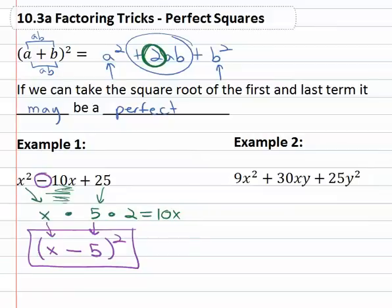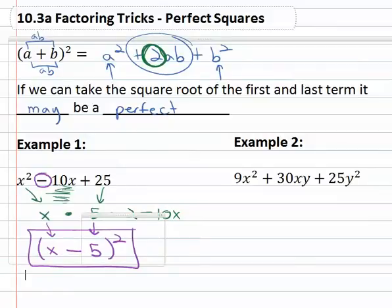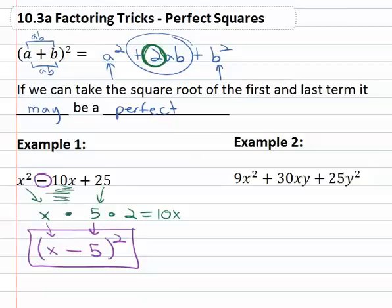Let's look at another one: nine x squared plus thirty xy plus twenty five y squared. Take a second to look at it. Can we take the square roots of the first and last terms? We can. The square root of nine x squared is three x. The square root of twenty five y squared is five y.